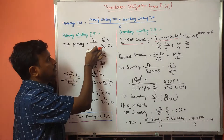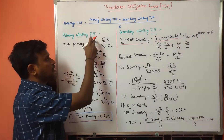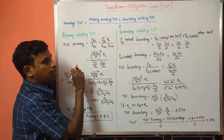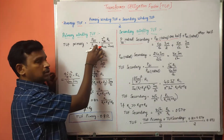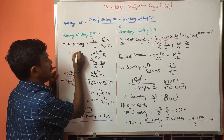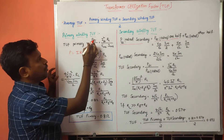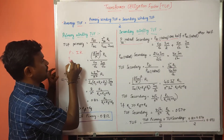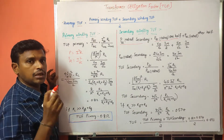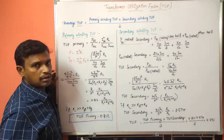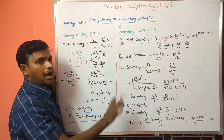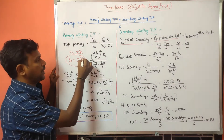So the formula for the transformer utilization factor is the DC power delivered to the AC power — it is the ratio of DC power to AC power. The general power formula is P = I²R. So for DC power, that is P_DC = I_DC² × R_L, where R_L is the load resistance in the full wave rectifier.